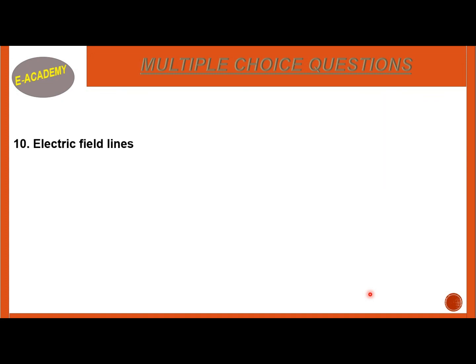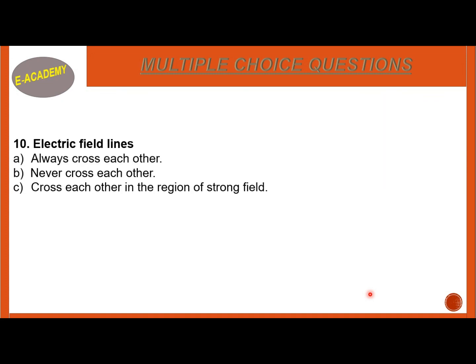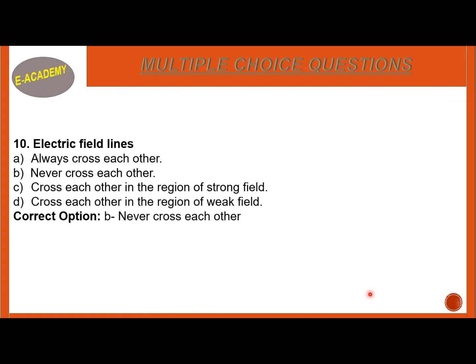MCQ Number 10: Electric field lines — always cross each other, never cross each other, cross each other in the region of strong field, or cross each other in the region of weak field? Electric field lines will never cross each other. The correct option is B, never cross each other.